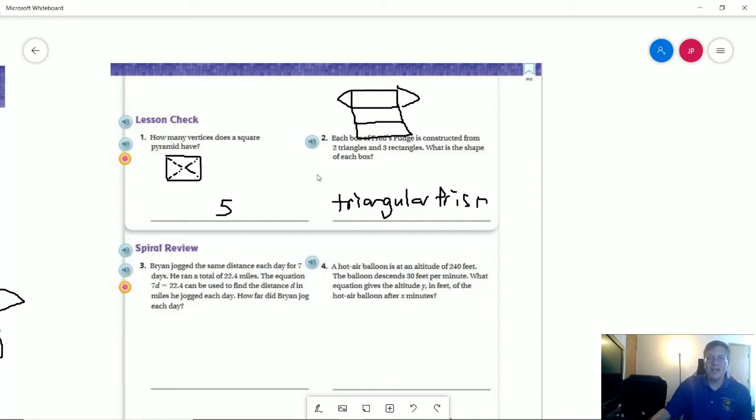And then our last one, again, we would have a triangular prism. And here is what that particular box would look like. So hopefully that helps you get an understanding of what we're working with.